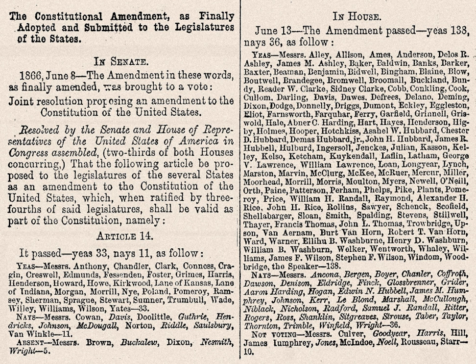The bill also guaranteed equal benefits and access to the law, a direct assault on the Black Codes passed by many postwar states. The Black Codes attempted to return ex-slaves to something like their former condition by, among other things, restricting their movement, forcing them to enter into year-long labor contracts, prohibiting them from owning firearms, and preventing them from suing or testifying in court. Although strongly urged by moderates in Congress to sign the bill, President Andrew Johnson vetoed it on March 27, 1866. Johnson's veto was overridden and the measure became law three weeks later.